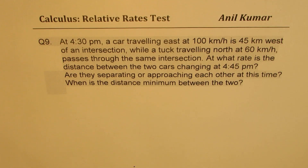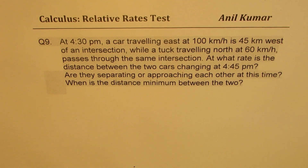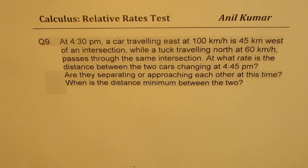I'm Anil Kumar sharing with you an excellent question from a previous test paper on related rate of change. Here is an example where we have two vehicles going in different directions and we need to find when the distance between them is minimum, and what is the rate at which the distance is increasing or decreasing. We also try to understand when the distance is increasing and when it is decreasing.